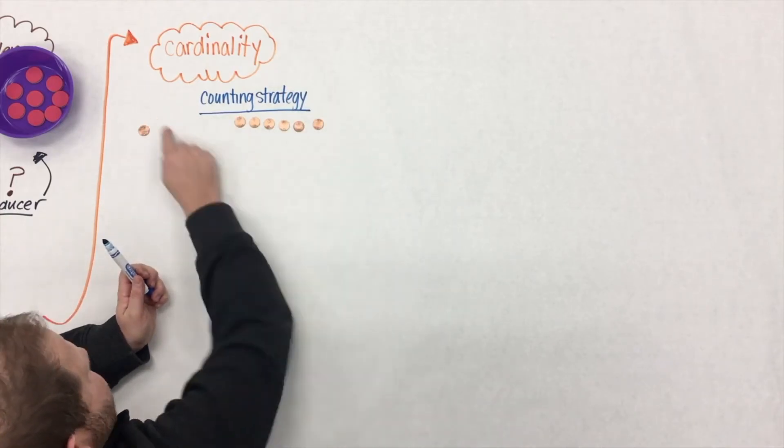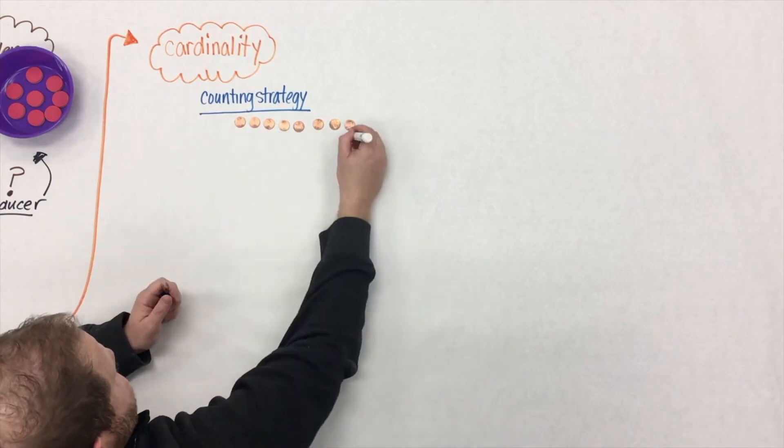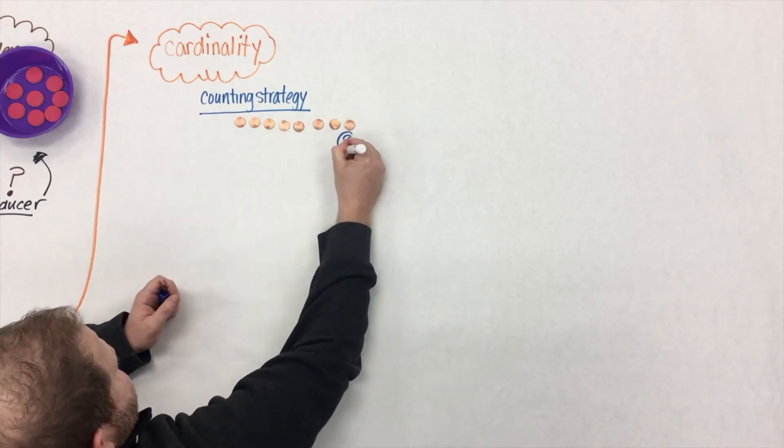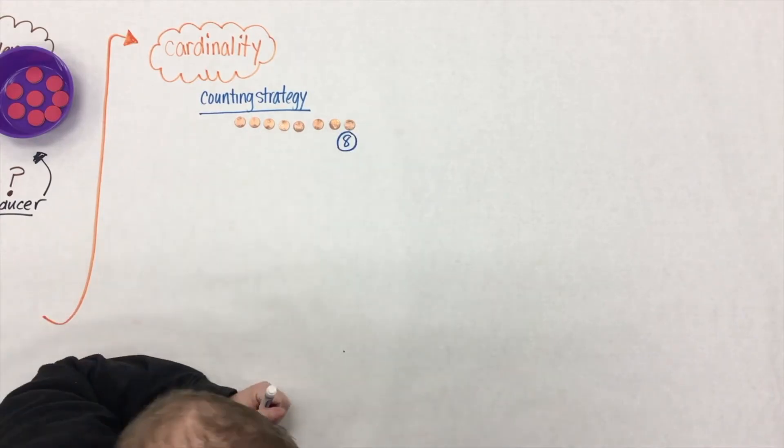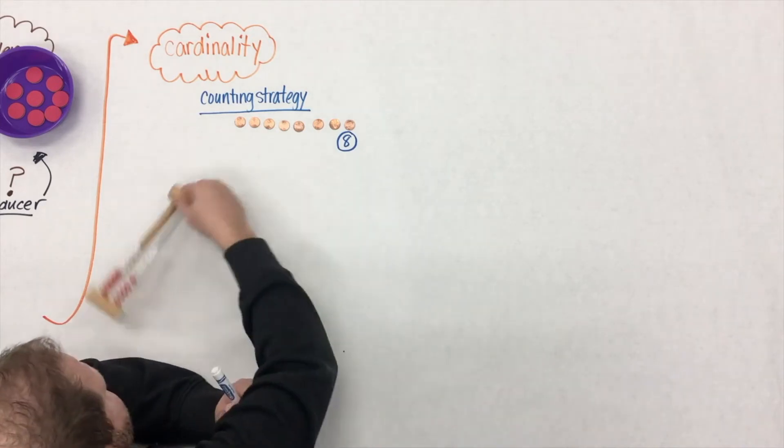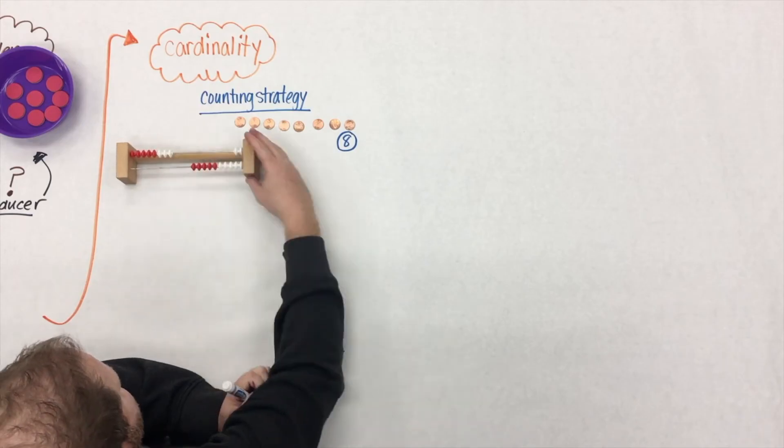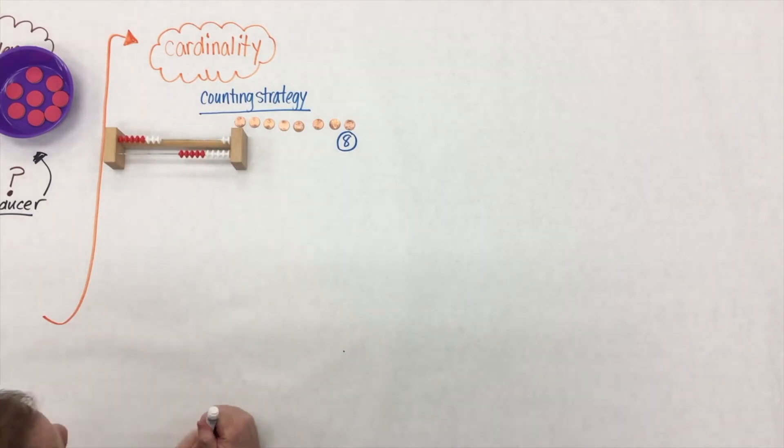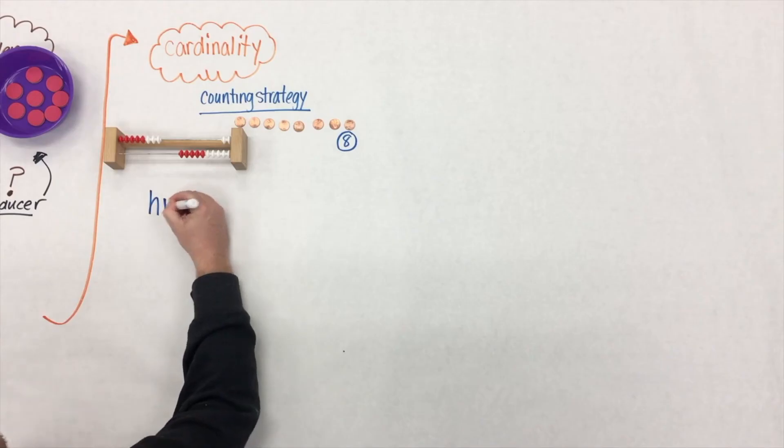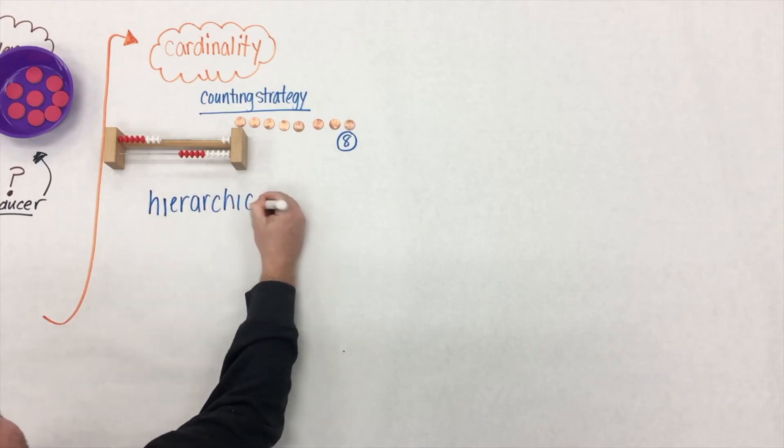So now they use a counting strategy where they line them up and count from one to eight, and they know that they said eight last so that there's eight in the count sequence. This was an example of a counter with the pennies. And on the bottom here with the Rekenrek, we have a producer of eight. And they're able to tell you that it's eight because of the last number.